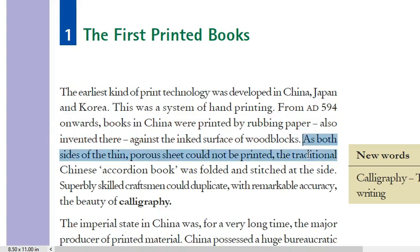As both sides of the thin porous sheet could not be printed, the traditional Chinese accordion book was folded and stitched at the side. Because the sheet was porous, if one side was printed the other side would also absorb ink — this is why the Chinese accordion book was folded and sealed on one side.